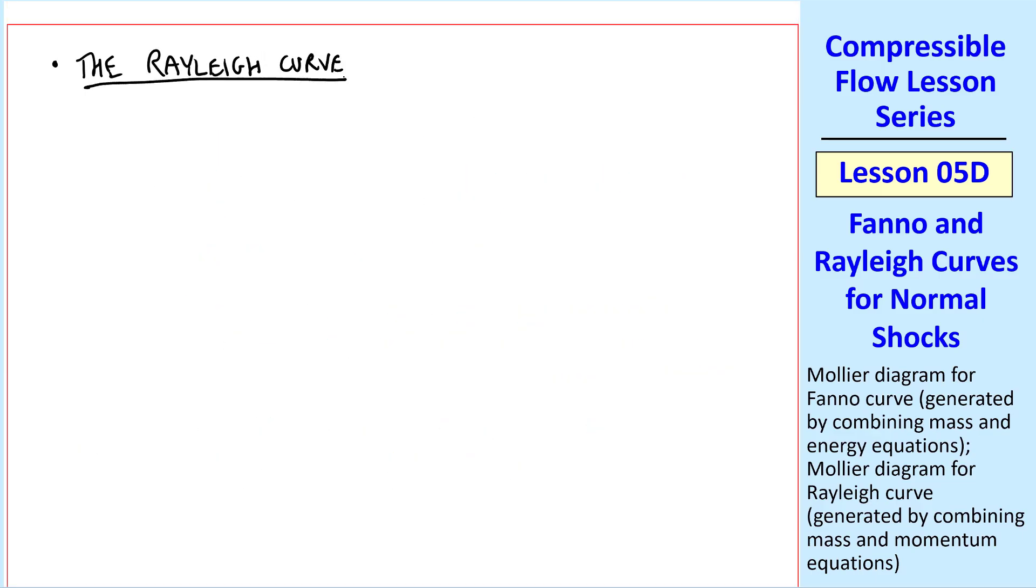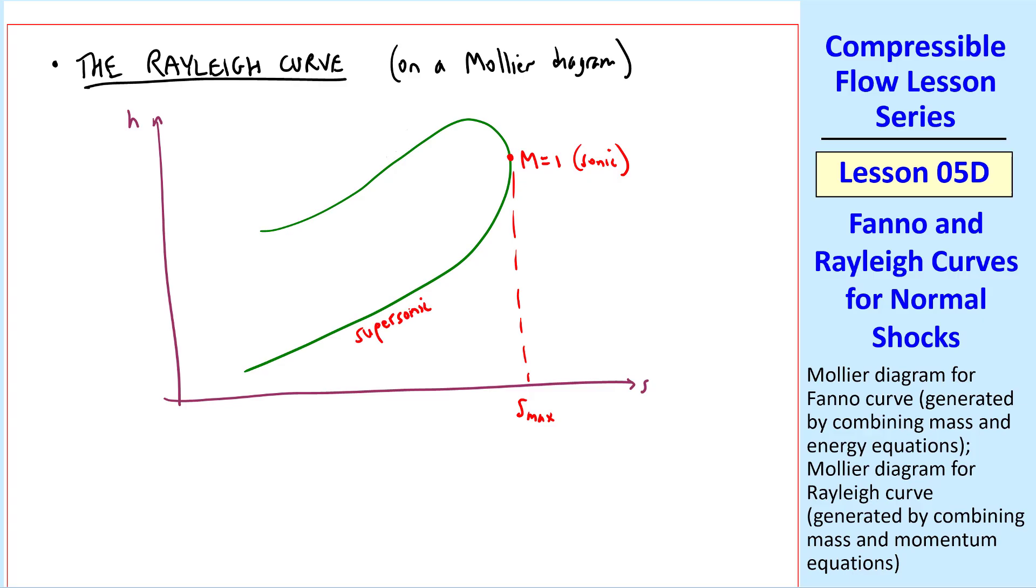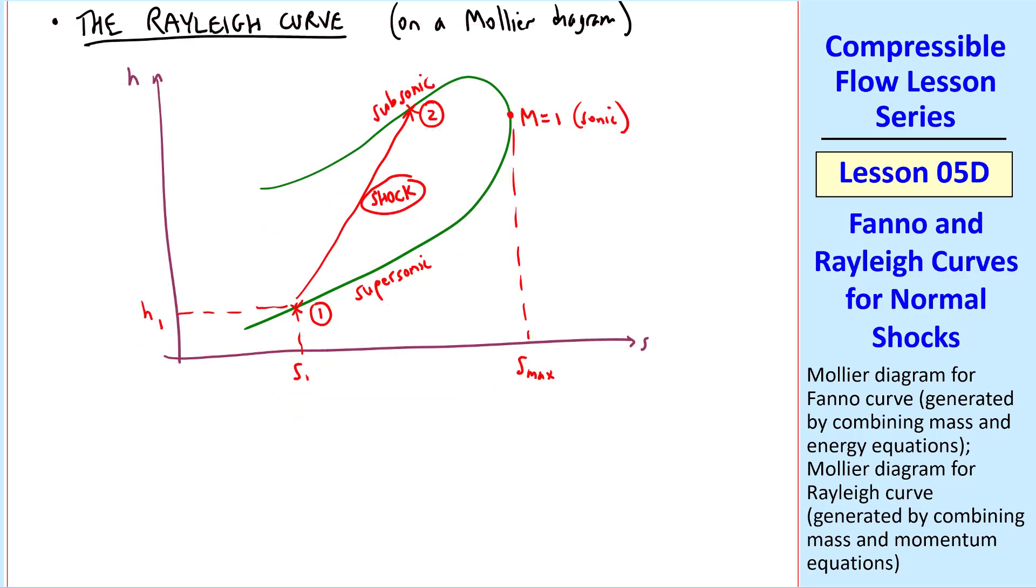Let's now sketch the Rayleigh curve, again on a Mollier diagram. The Rayleigh curve looks something like this, and a lot of the features are similar to the Fanno curve. For example, M equal 1, or sonic, at the maximum entropy point. Again, as with Fanno, the supersonic branch is on the bottom, and the subsonic branch is on the top. And we make a similar argument, that if we start at some point 1 in the supersonic branch of this plot, and we have a shock, the shock will go from supersonic to subsonic and hit somewhere up here on the subsonic branch. This is the shock. But the Rayleigh curve has many other points along here.